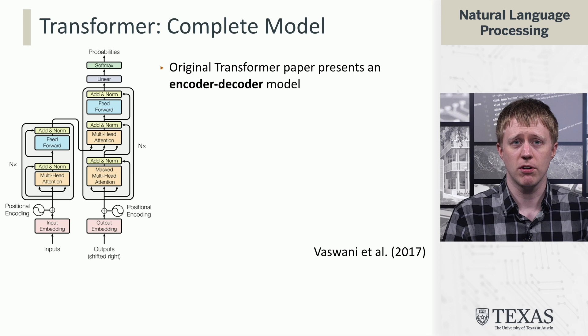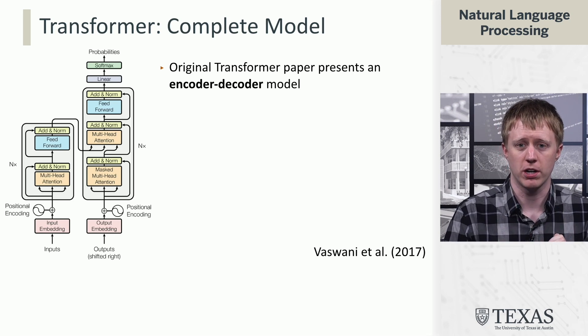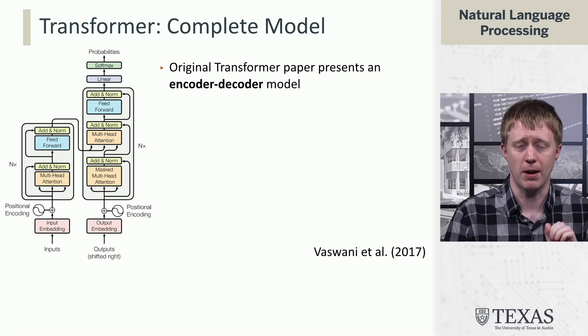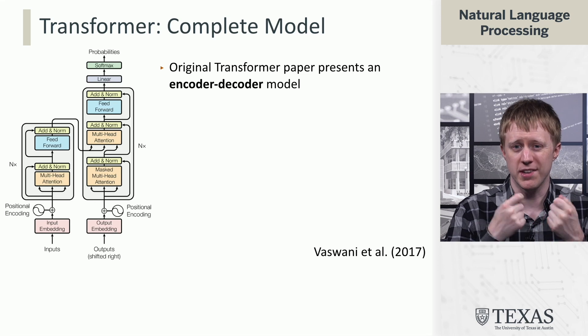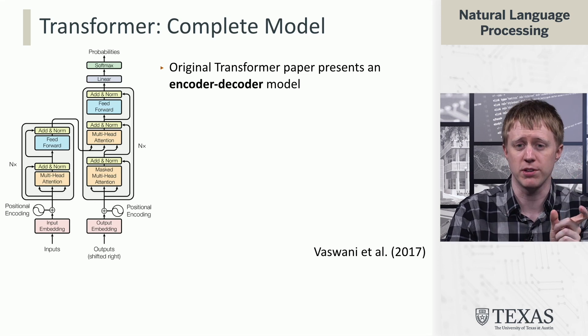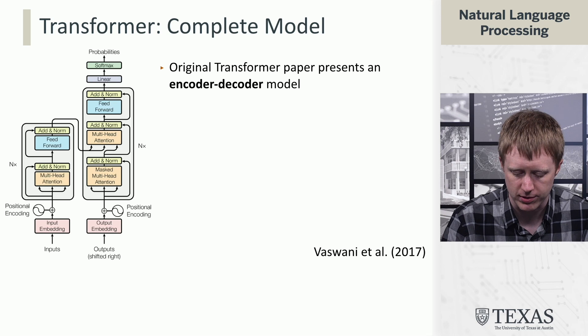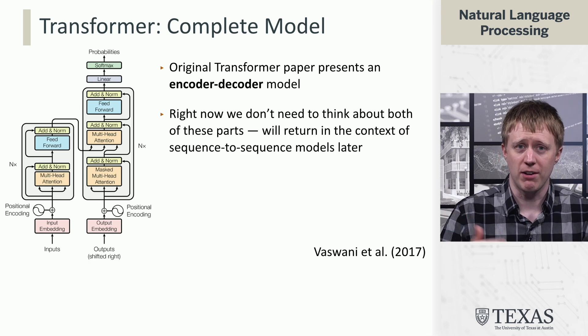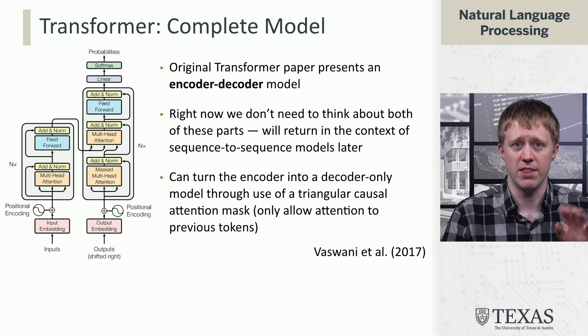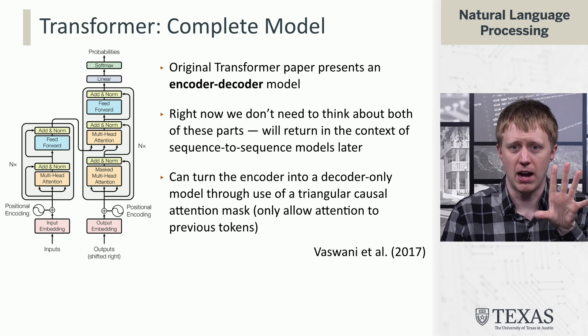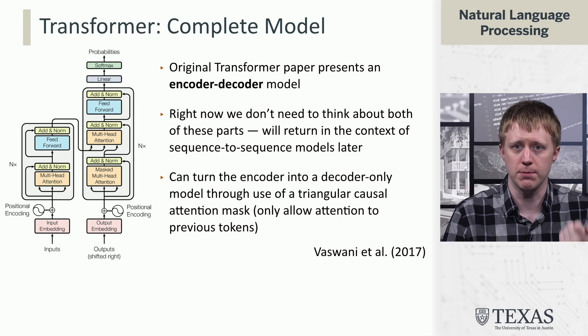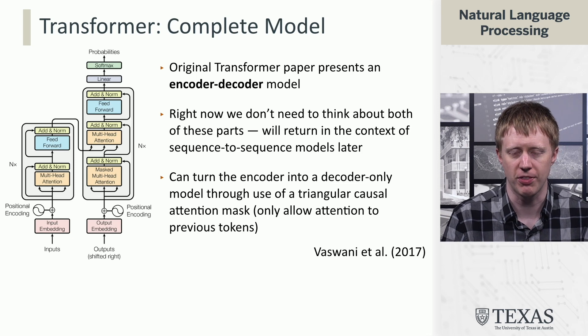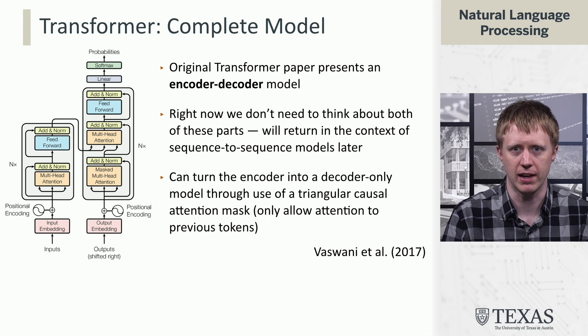All right. So now we're kind of almost ready to understand the full model. We're going to come back to it a little bit later when we talk about sequence to sequence models, because the original transformer paper presents an encoder decoder model. So it's not for language modeling. It's actually for mapping one sequence of tokens to another sequence of tokens. We don't really need to think about that right now. We can just sort of think about the encoder being a language model and ignore the decoder entirely. There's going to need to be some modifications to do that, but we'll come back and talk about that more when we see how this connects to language modeling. That's the end of this segment. We'll do this again. Thank you.